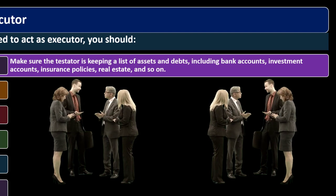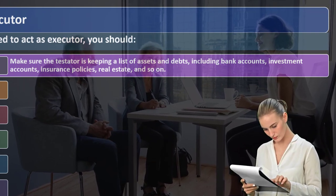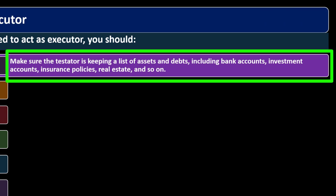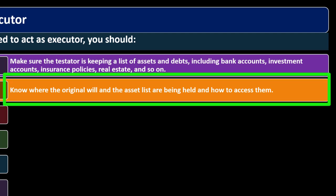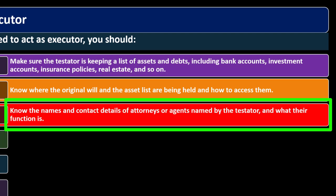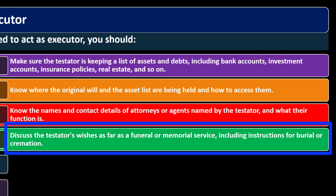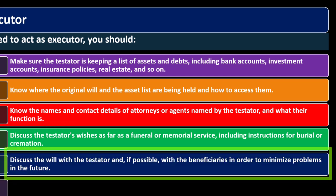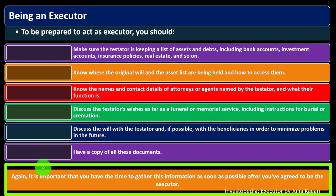To be prepared to act as executor, make sure the testator is keeping a list of assets and debts including bank accounts, investment accounts, insurance policies, and real estate. Know where the original will and asset list are held and how to access them. Know the contact details of attorneys or agents named by the testator and discuss the testator's wishes regarding funeral or memorial service.